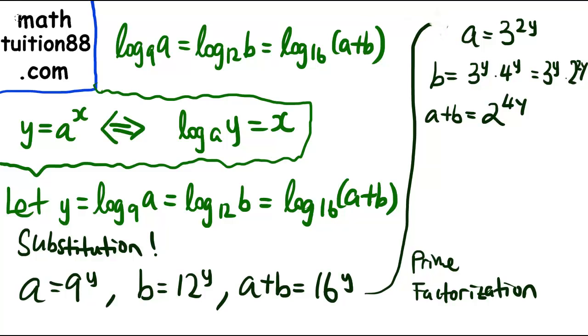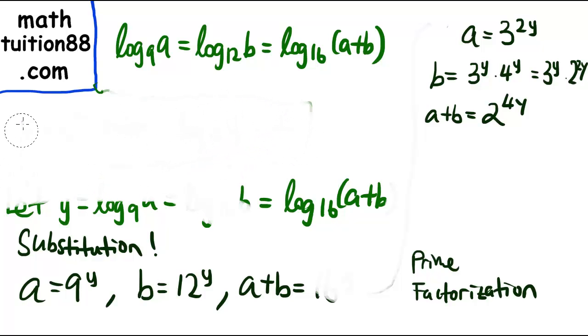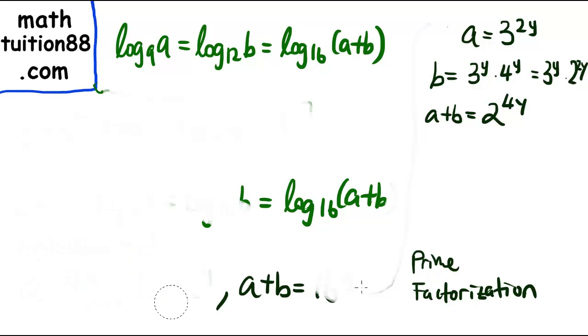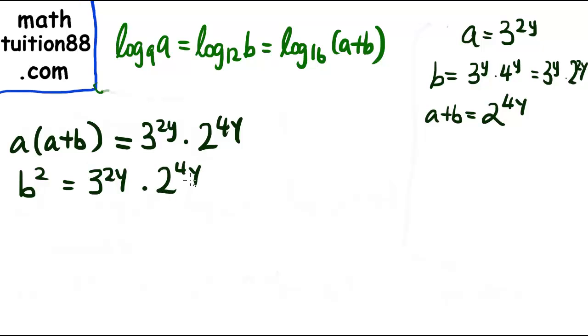So this will be an important equation which we will keep. So now what can we do with this? We will need to use a very, this is why this question is challenging, we need to have an observation. We can observe that a times (a+b) is actually 3²ʸ times 2⁴ʸ, which is actually the same as b². b² is also 3²ʸ times 2⁴ʸ. So a(a+b) = b². This is a critical observation.